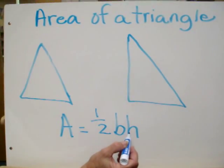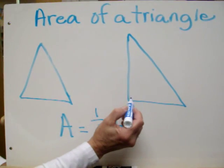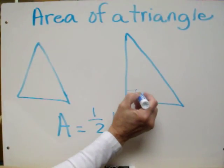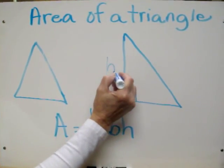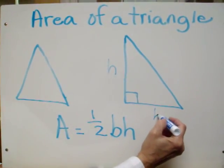Base times height. On a right triangle we're looking for the right corner with a right degree angle. This is considered the height of the triangle. The bottom is considered the base.